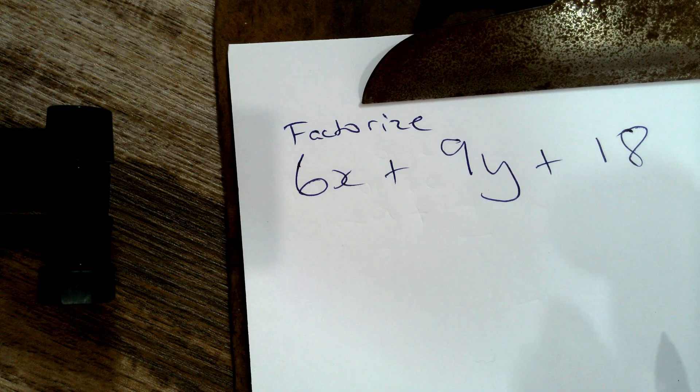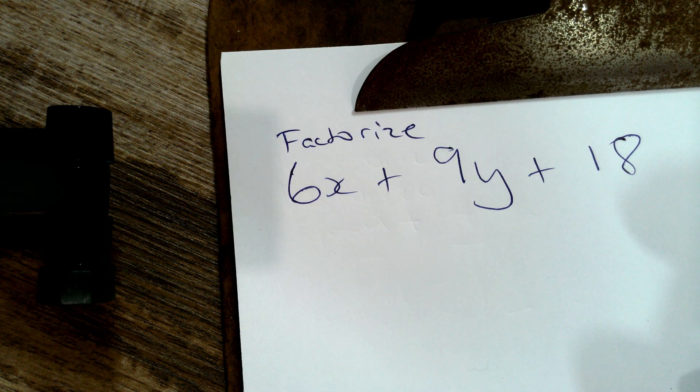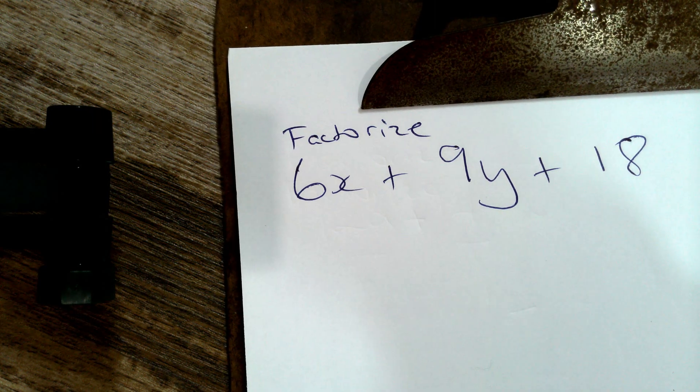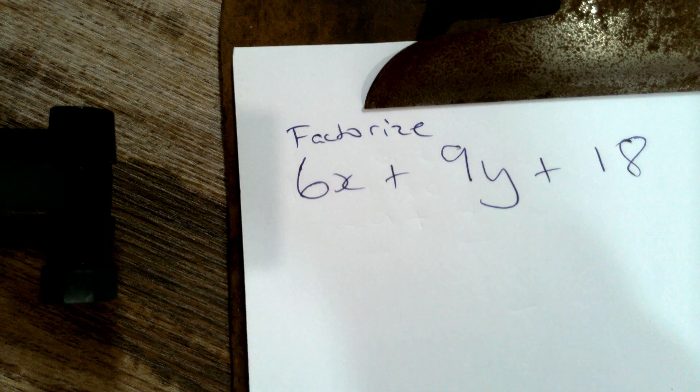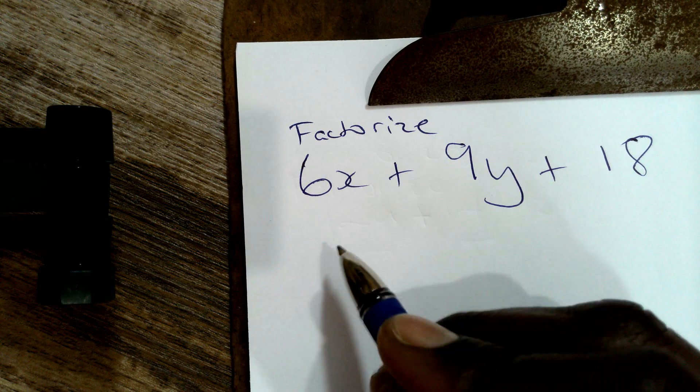So that was simple — we saw how to factorize an expression where the highest power of the variable is 1. Let's try another one, a little more complicated. We'll add another variable and factorize it. We have 6x plus 9y plus 18. There are two variables and the maximum power for any of them is 1. The first thing is to find the GCF.